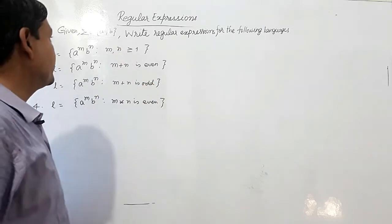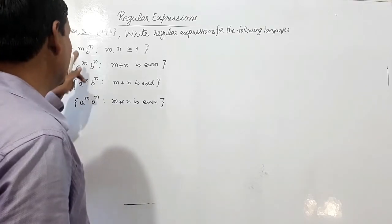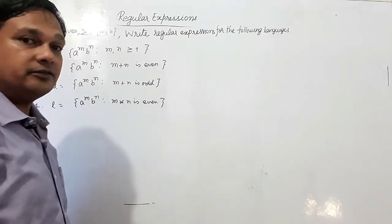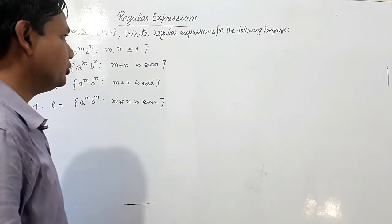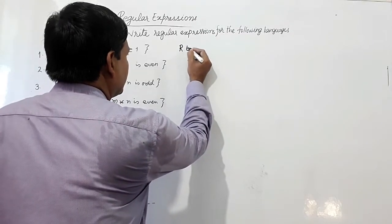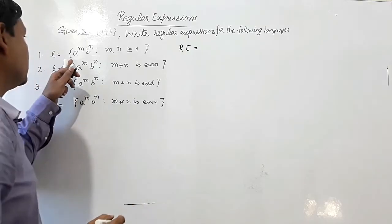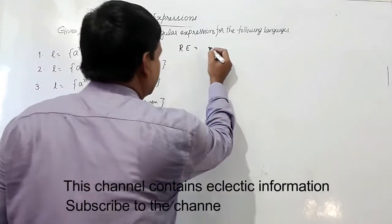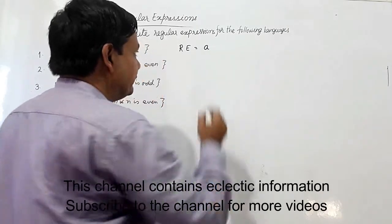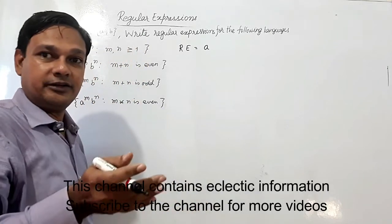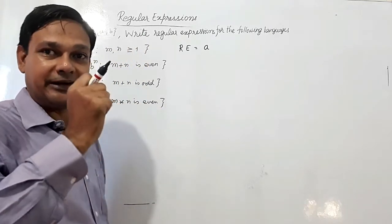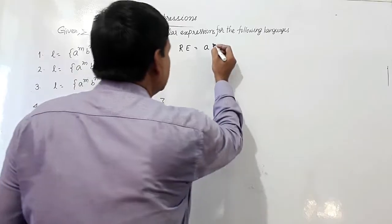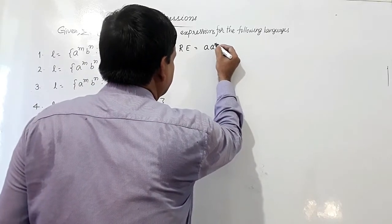We have to write regular expressions for these languages where sigma is {a, b}. Language L equals a^m b^n such that m and n are both greater than or equal to 1. So there should be at least one a and at least one b. For at least one a, I will use a concatenated with a-star, meaning at least one a and more than one a's are also possible. So I can write a concatenation with a-star.